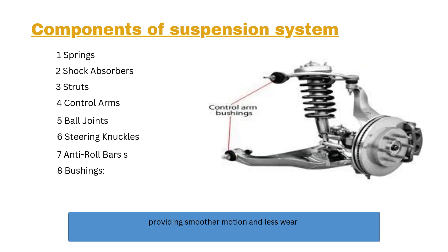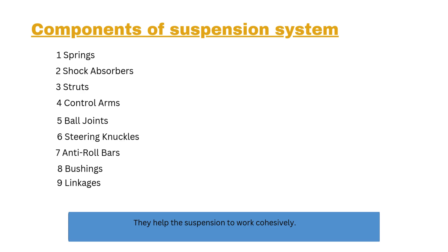Number eight: bushings. Bushings are rubber or polyurethane components that reduce friction and vibrations between suspension parts, providing smoother motion and less wear. Number nine: linkages. These are mechanical connections between different suspension components, such as between the shock absorbers, springs, and control arms. They help the suspension to work cohesively.